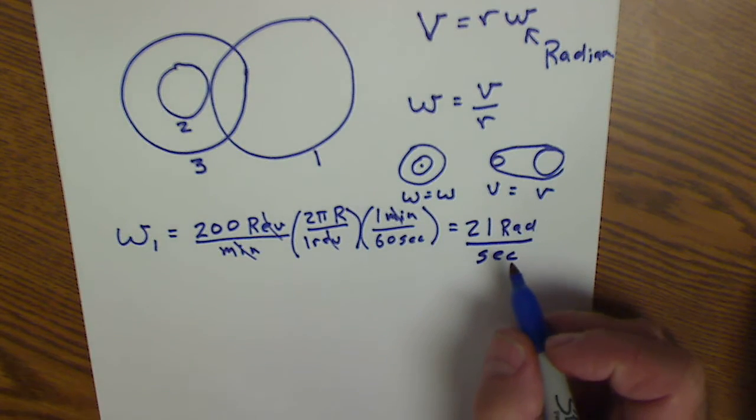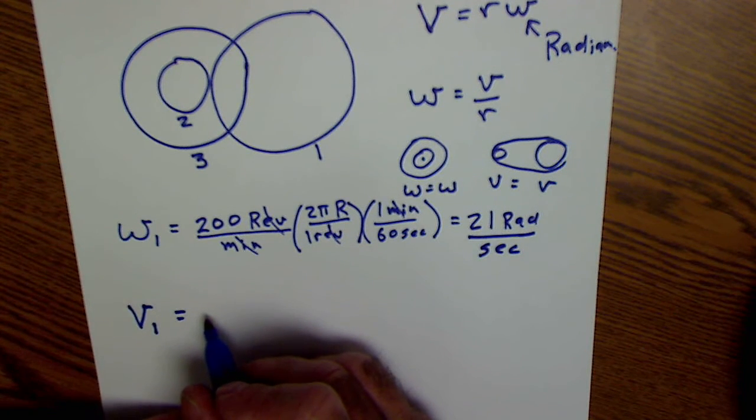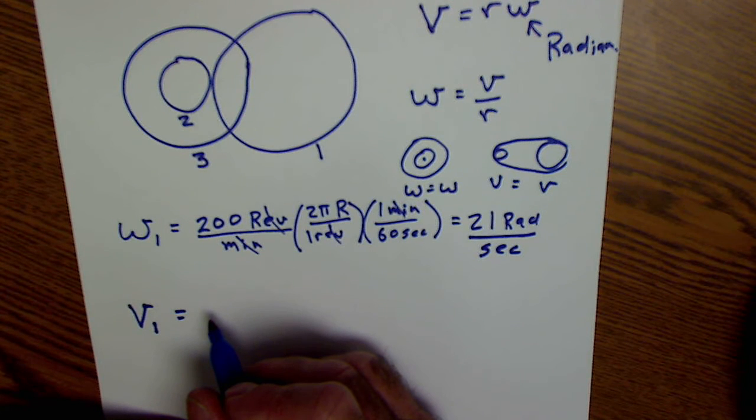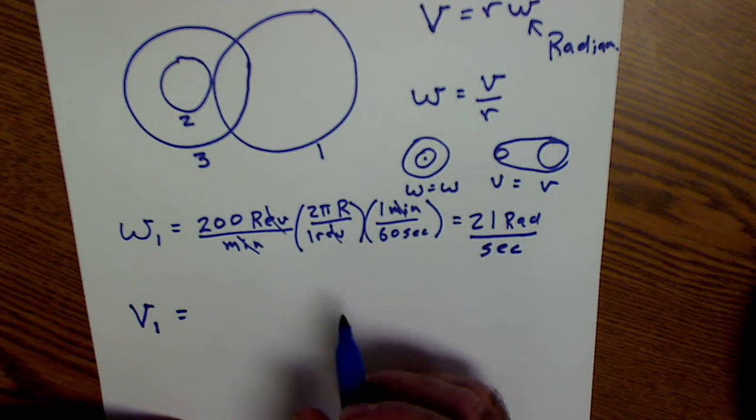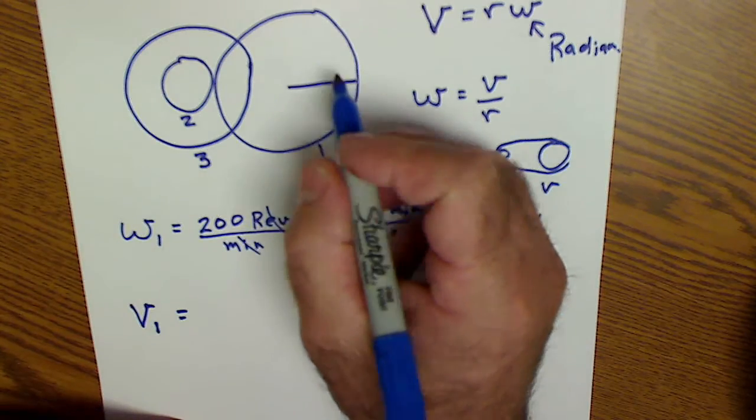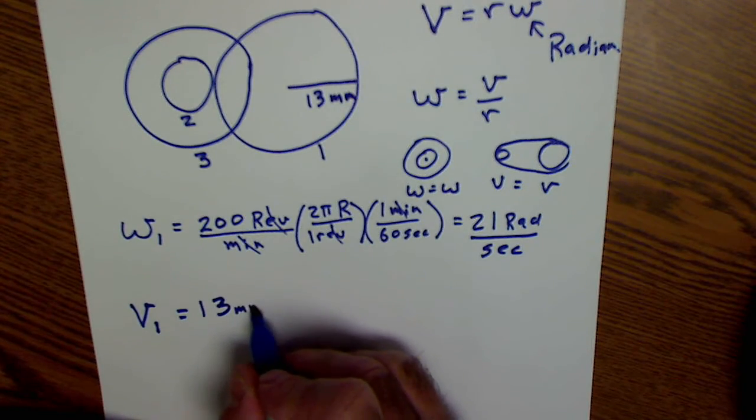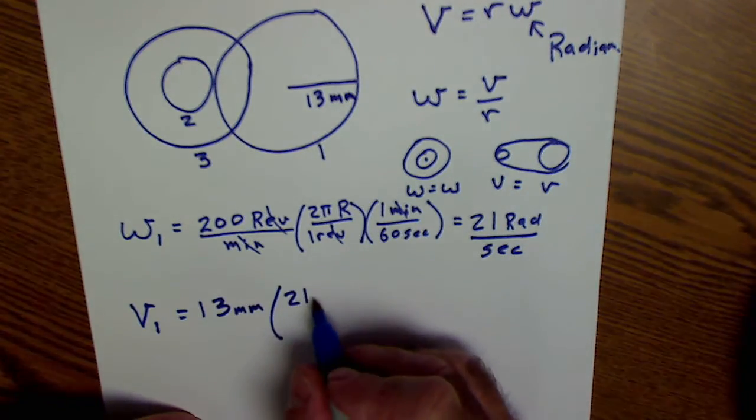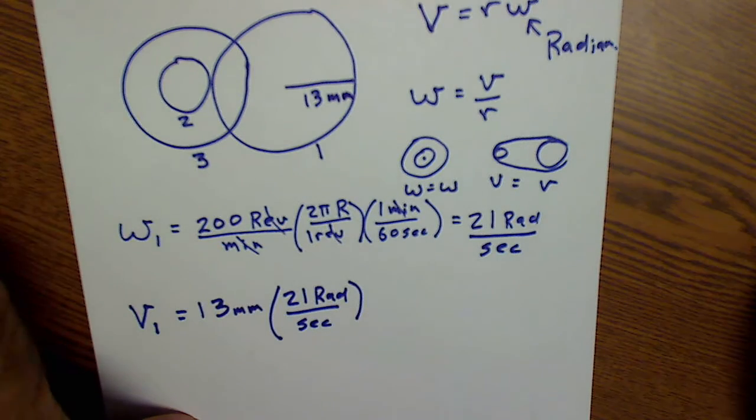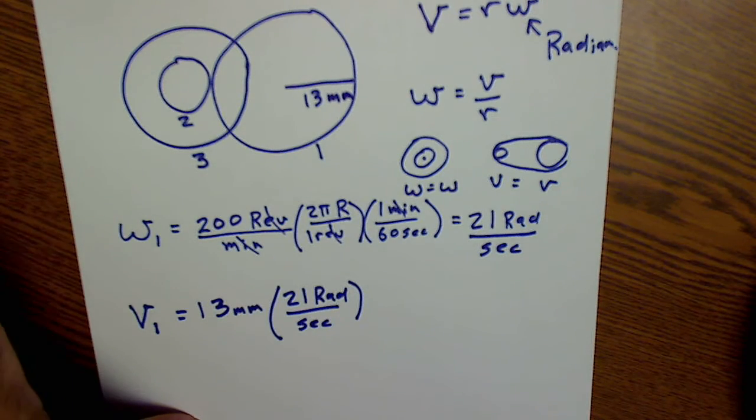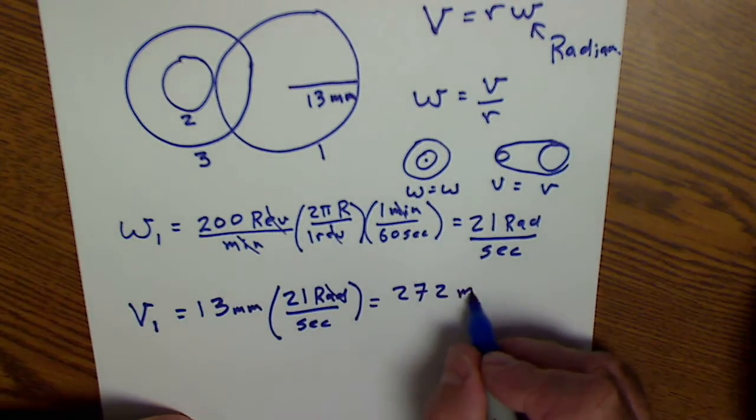Part B in that question says, what is the linear velocity of gear one? So linear velocity of gear one is equal to its radius, which is the linear velocity of teeth on gear one at a distance 13 millimeters from its axle. So I have 13 millimeters, that's a radius. So my linear velocity of gear one is 13 millimeters times its angular velocity in radians. So my linear velocity will be 21 times 13 or 272. Radians drop out, millimeters per second.